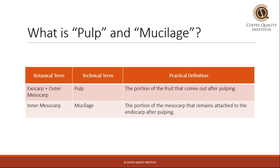Now the eno mesocarp, or the mucilage, is left on the parchment after the pulping. Therefore, it remains attached to the endocarp or the parchment, and that's called the mucilage. These terms seem to have come out of the fact that when the coffee goes through a pulper, it takes off the pulp, and there is something left, and we call that mucilage.